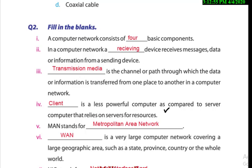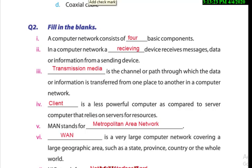Dash is a less powerful computer as compared to a server computer that relies on the server for resources — that is the client. Client is a less powerful computer compared to the server. MAN stands for Metropolitan Area Network. And WAN — which covers a large geographic area — definitely, we can cover a large area with the help of WAN.